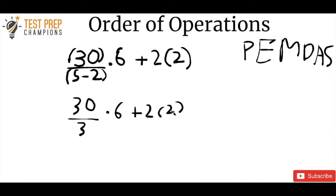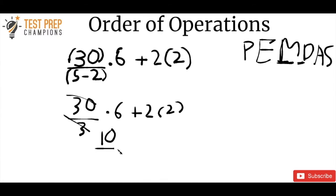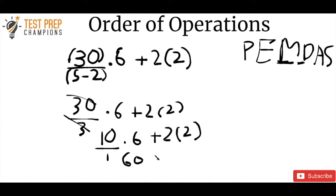Now we have multiplication and division, which come before addition. Working left to right, 30 divided by 3 is 10. So we have 10 times 6, plus 2 times 2. We do 10 times 6, which is 60, then 2 times 2, which is 4. So 60 plus 4 equals 64.